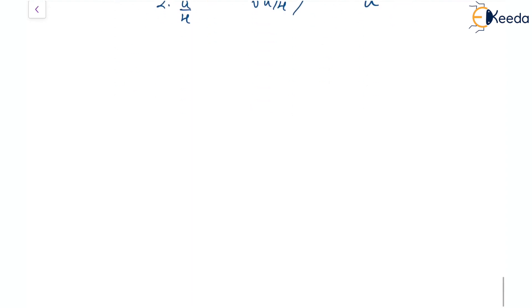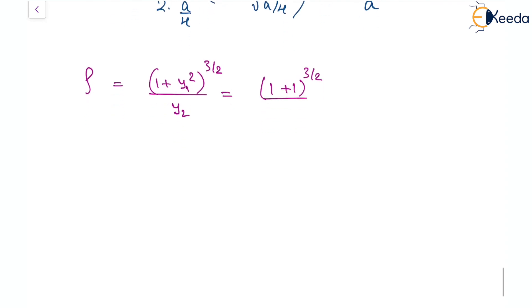Now we find the radius of curvature using ρ = (1 + y1²)^(3/2) / y2. With y1 = −1 and y2 = 4/a: ρ = (1 + 1)^(3/2) / (4/a) = 2^(3/2) · a/4 = a/√2.